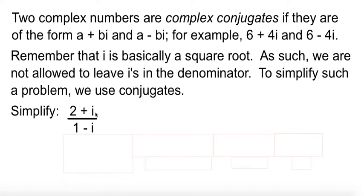We have 2 plus i over 1 minus i. Well, we have to multiply by the conjugate of the bottom like we did back in chapter 0 when we did these radical things. 0, 8 or 0, 9, somewhere in there. The conjugate of 1 minus i is 1 plus i. If you do it to the bottom, you have to do it to the top.